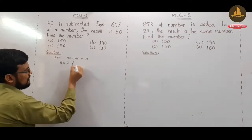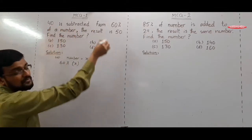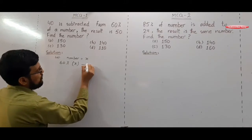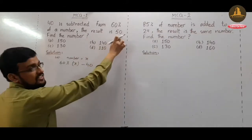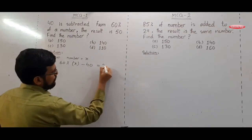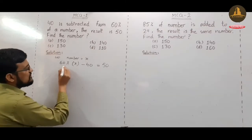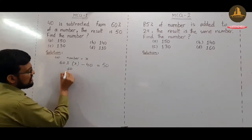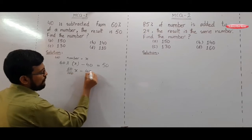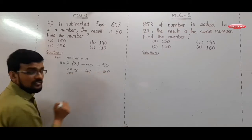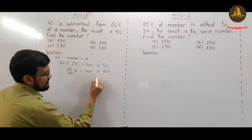40 is subtracted means minus 40, and the result is 50. So 60% means 60 divided by 100 times X minus 40 equals 50. So minus 40 becomes positive plus when it moves from left to right.